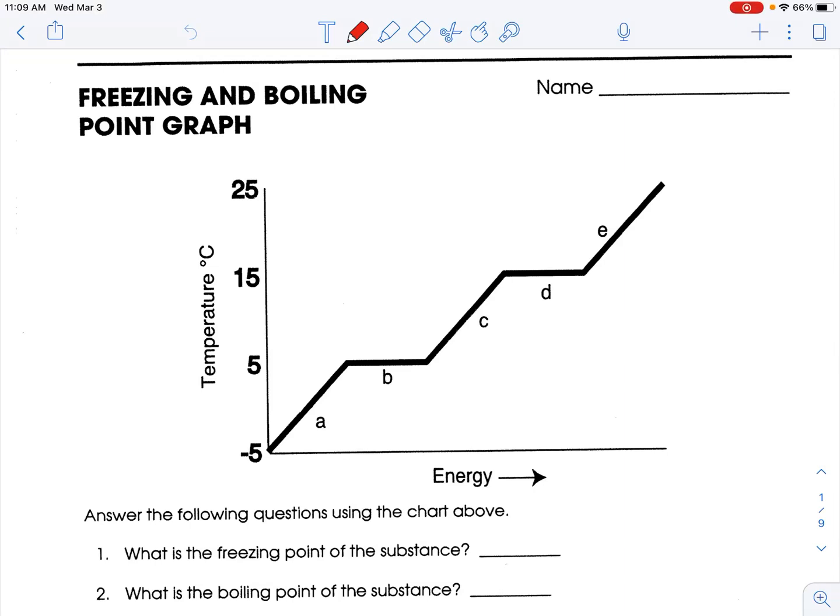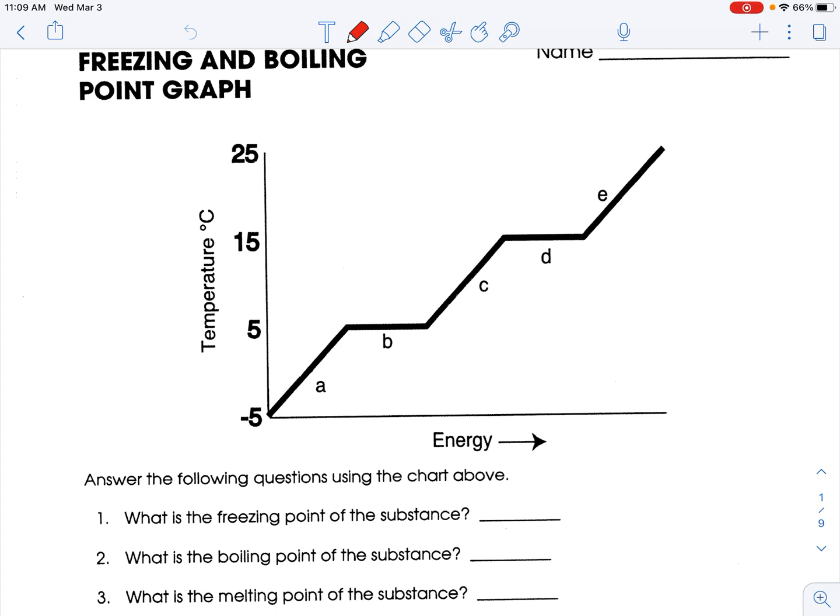Okay, this is the freezing and boiling point graph. We have an energy diagram. Energy is on the x, temperature is on the y. Notice that zero is somewhere within section A. We've got quantitative values here.